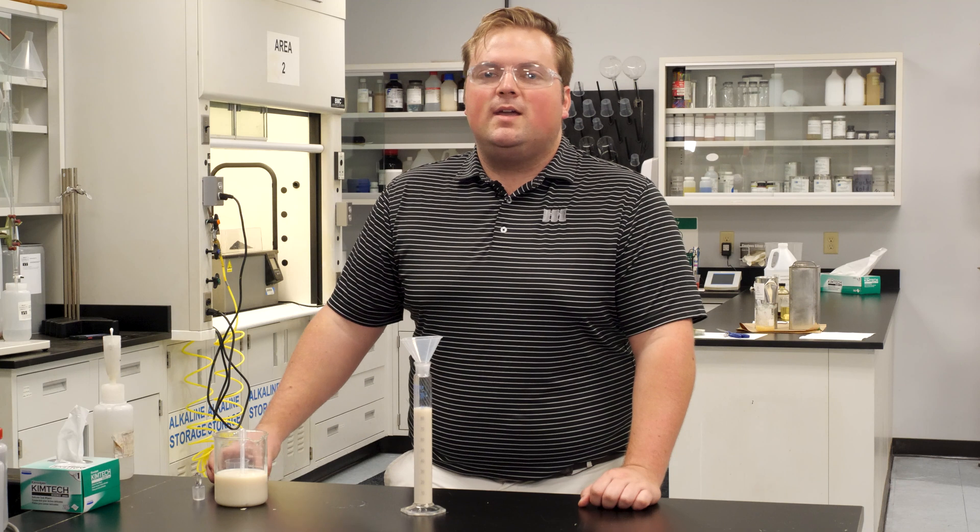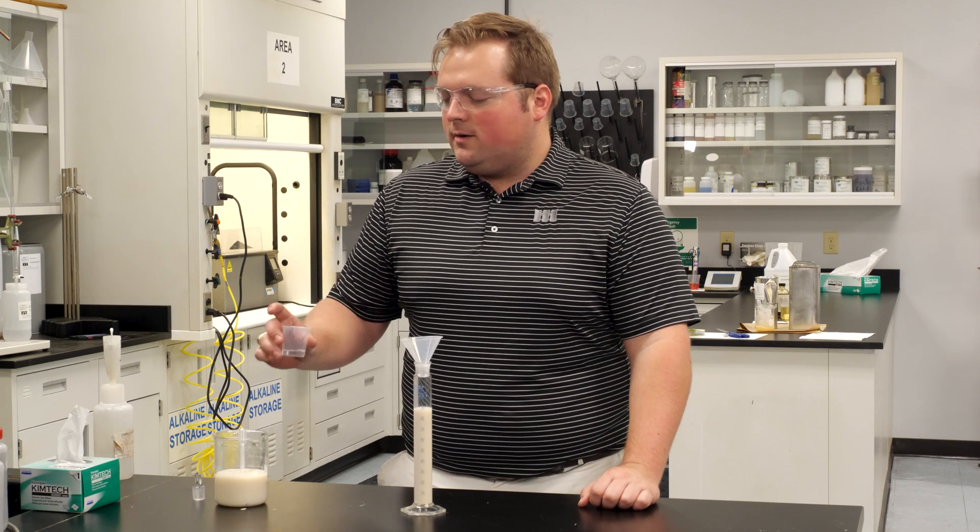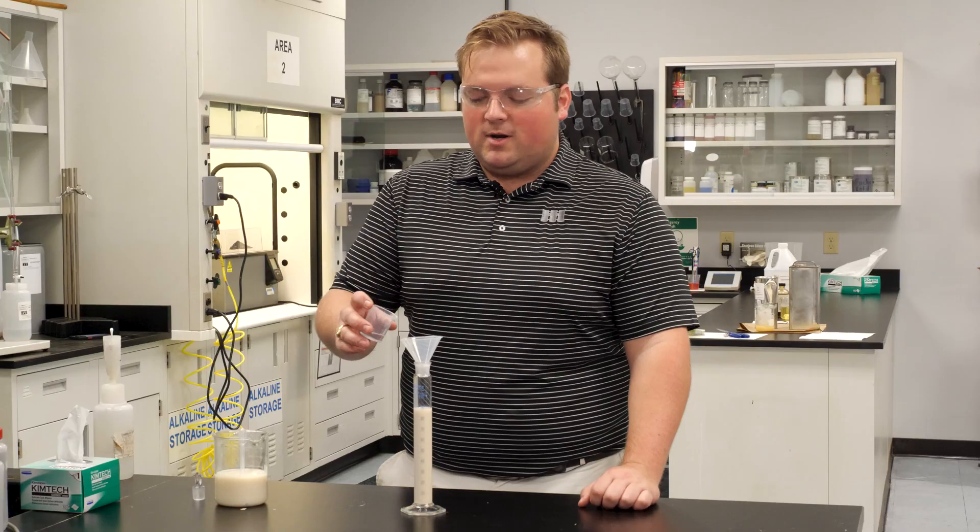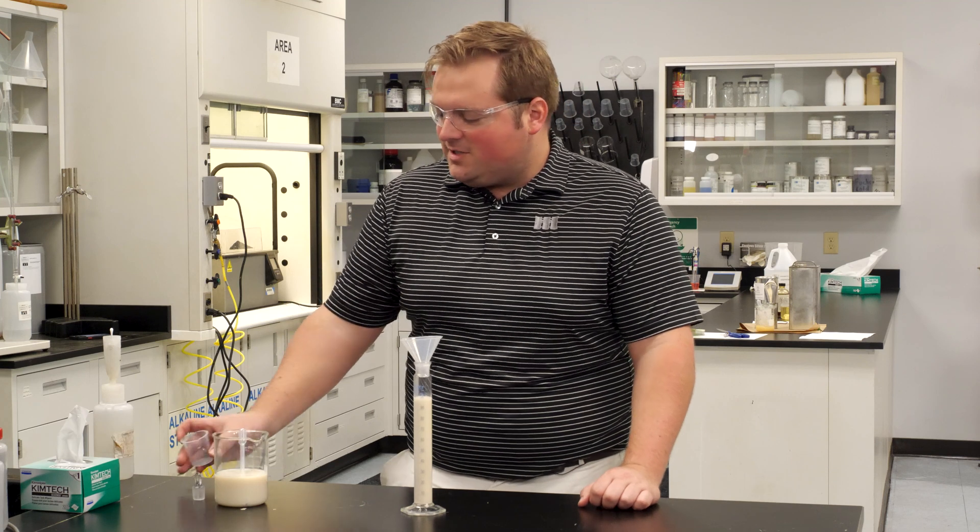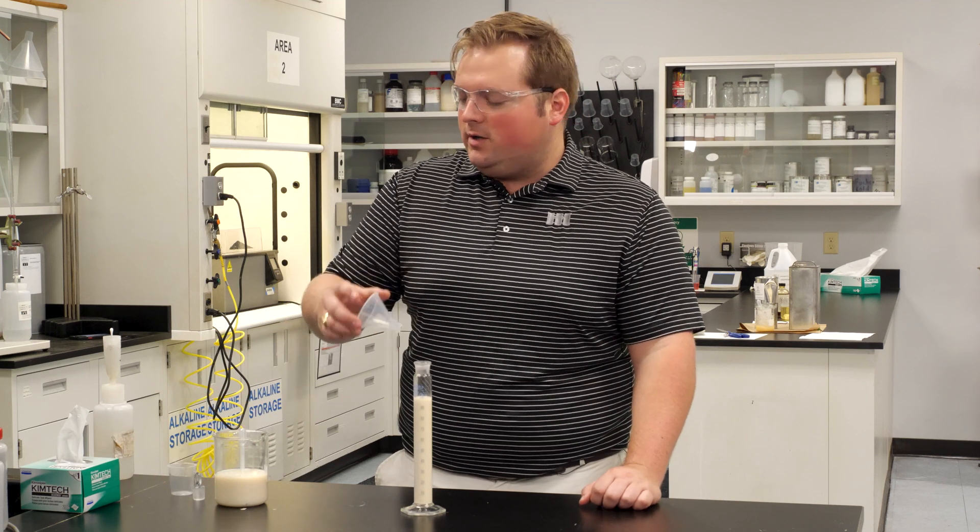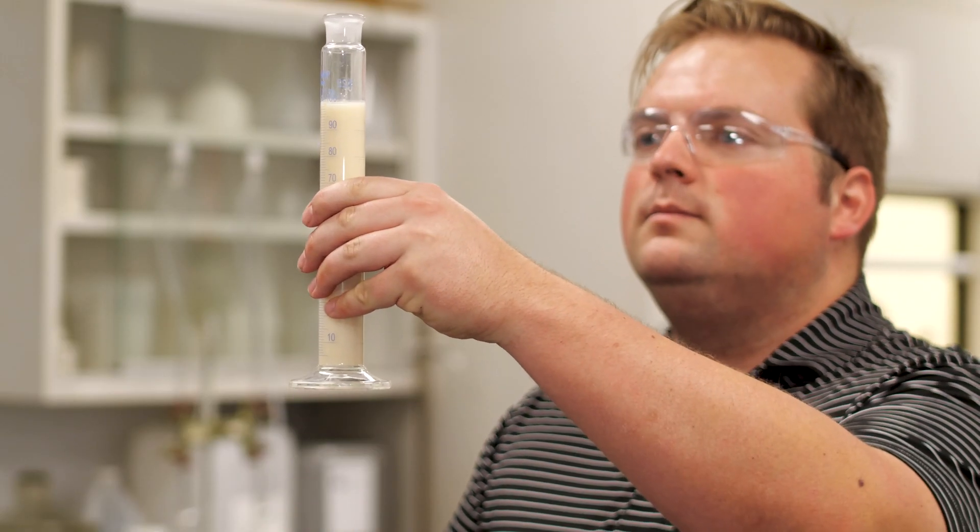Once we have the exact measurement of the solution we're testing, we're going to take 10 mils of concentrated hydrochloric acid and spike the solution. Then we'll double check to make sure our total volume is up to 100 mils, and we're good.